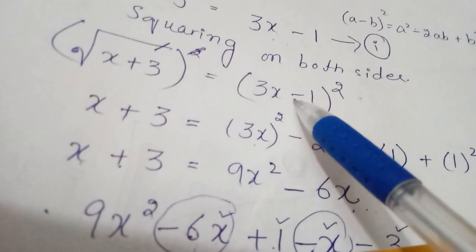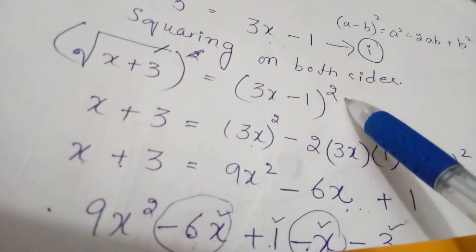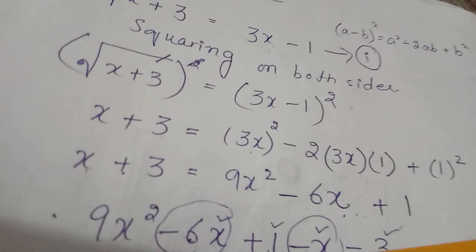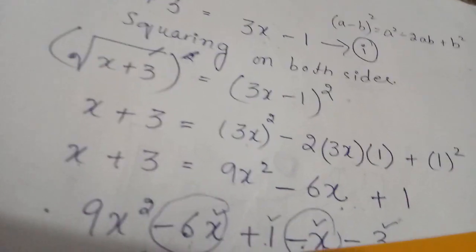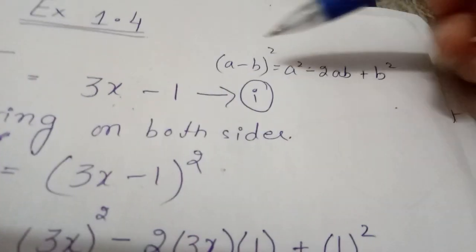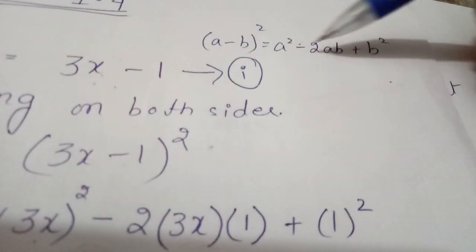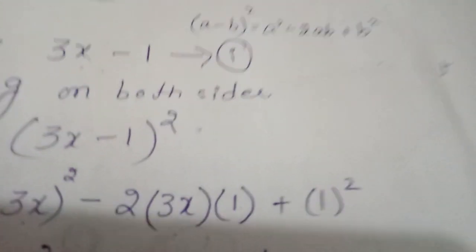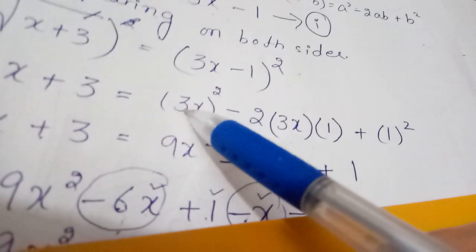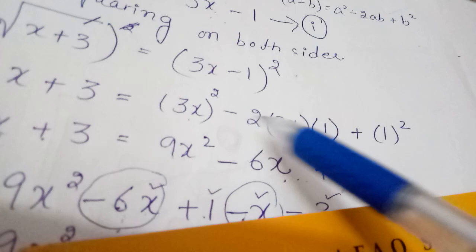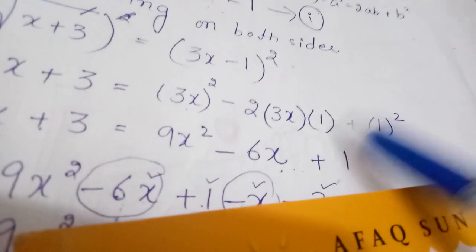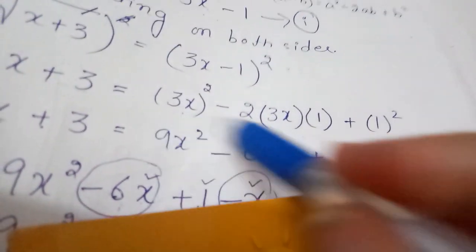We open the whole square using the formula: (a − b)² = a² − 2ab + b². Here a is 3x and b is 1. So we get: (3x)² − 2(3x)(1) + (1)², which gives 9x² − 6x + 1.